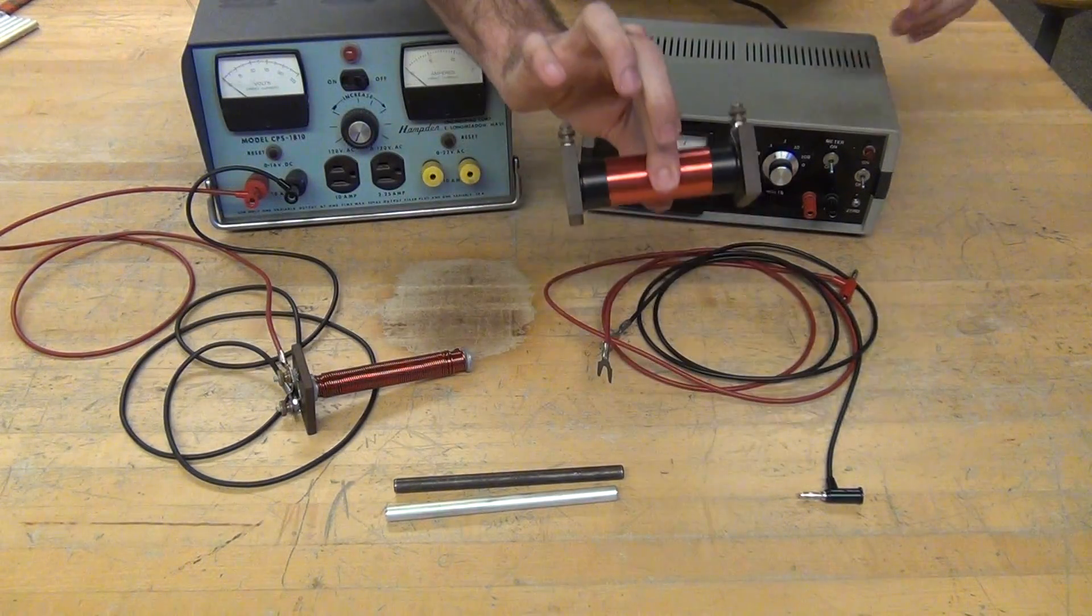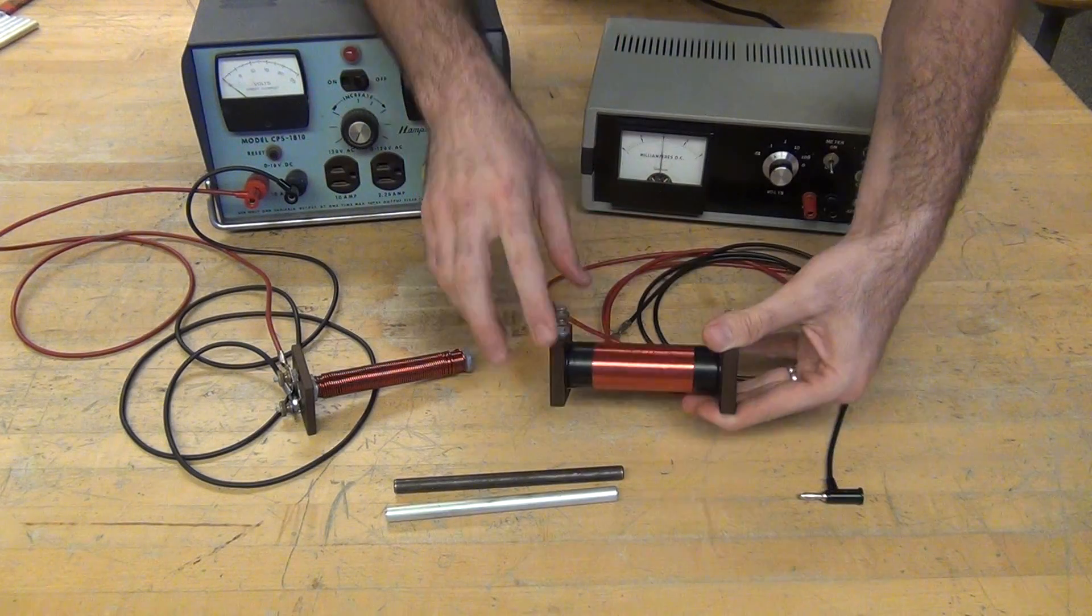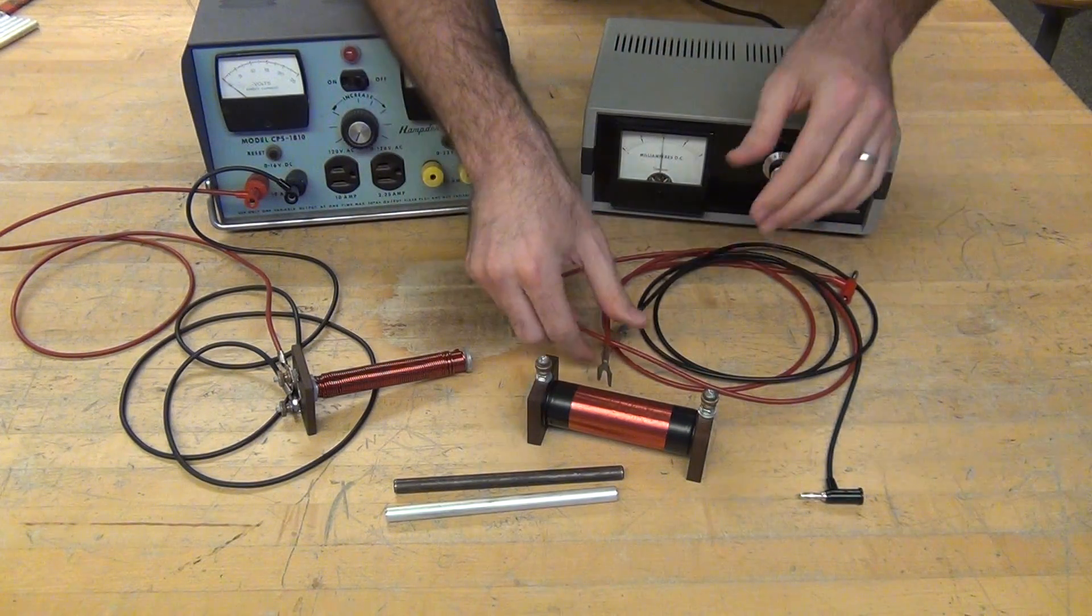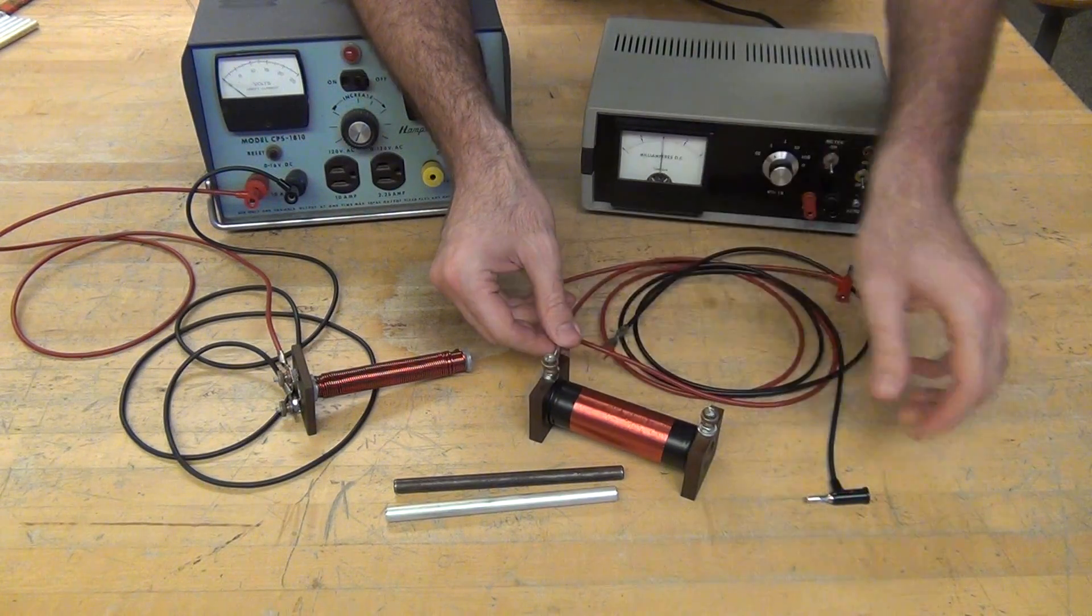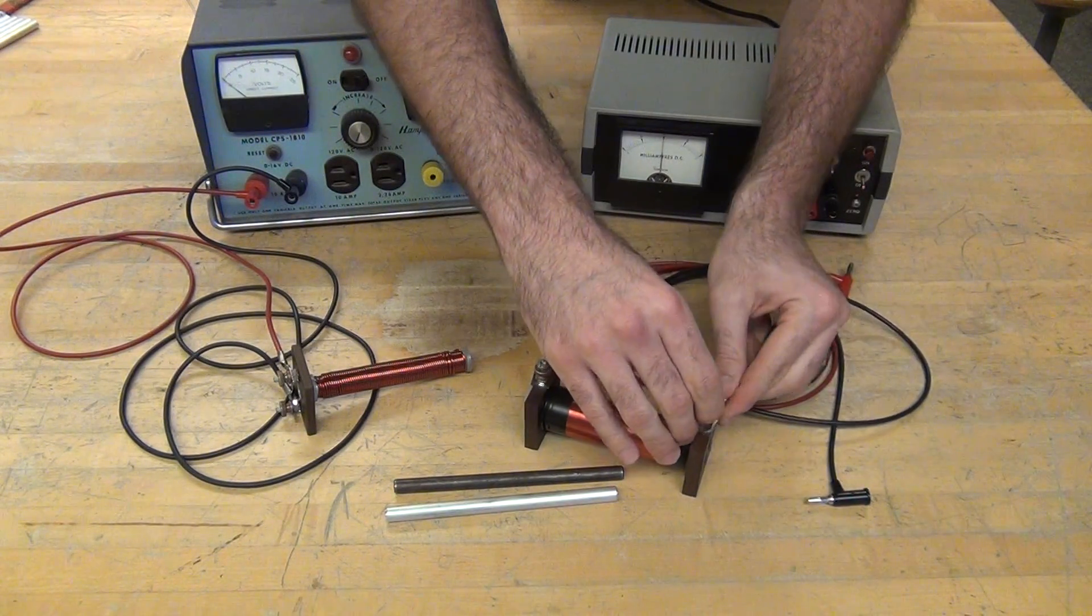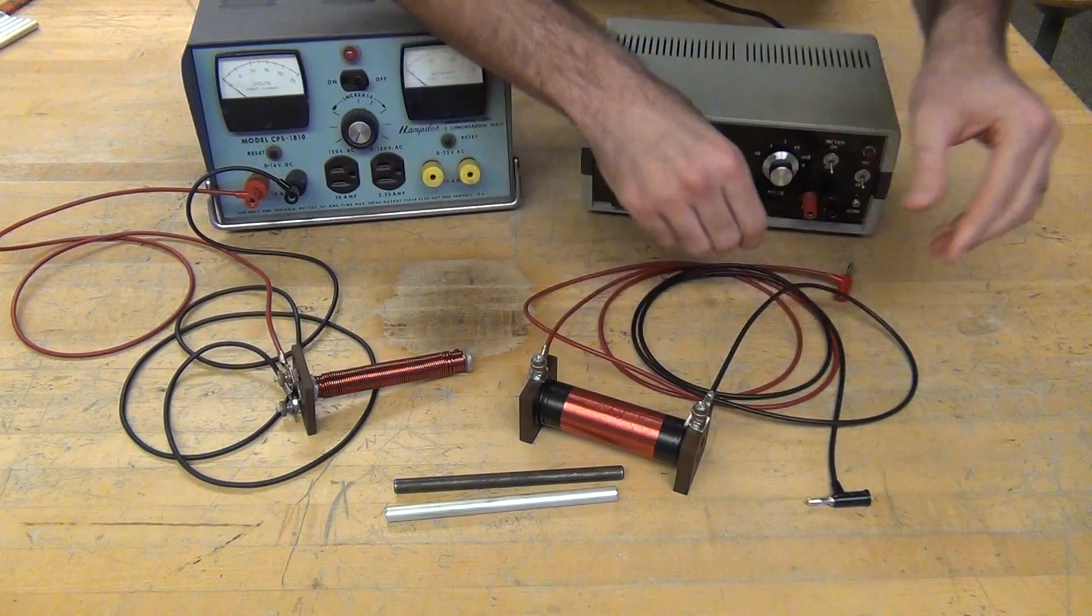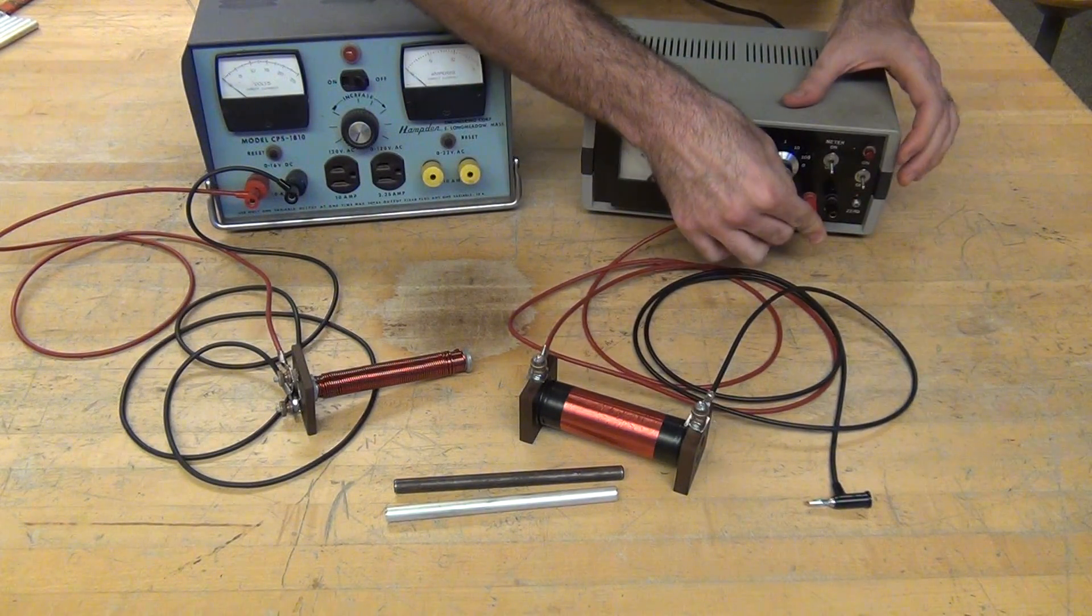And then our other coil, which has many turns of a very fine wire, is going to be hooked up to our sensitive current meter. And the spade ends up, and the banana plugs up.